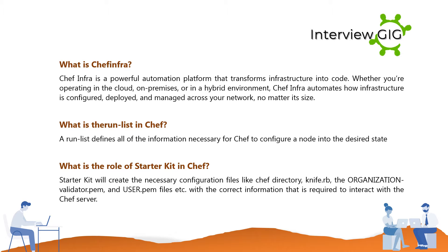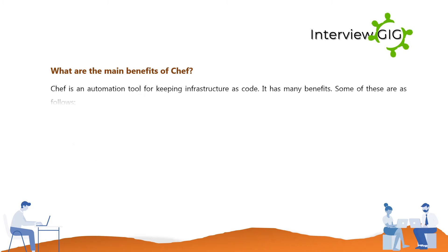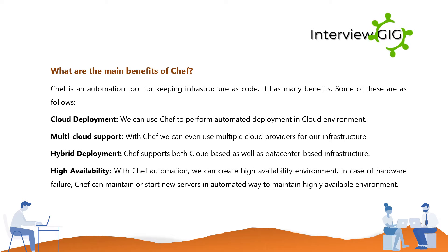What are the main benefits of Chef? Chef is an automation tool for keeping infrastructure as code and has many benefits. Cloud deployment: Chef can perform automated deployment in a cloud environment. Multi-cloud support: Chef supports multiple cloud providers. Hybrid deployment: Chef supports both cloud-based and data center-based infrastructure. High availability: With Chef automation, you can create a high availability environment; in case of hardware failure, Chef can maintain or start new servers in an automated way.